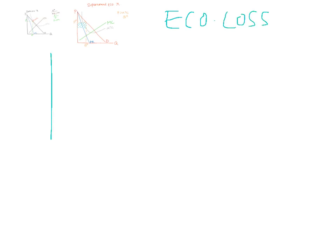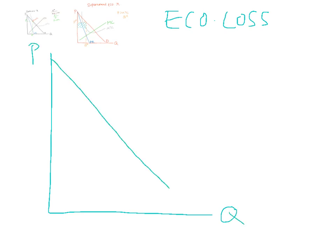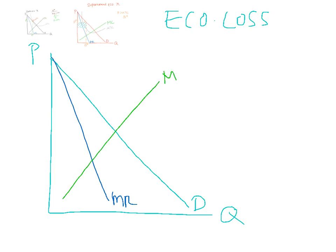And then we can look at the situation of economic loss. Draw your curve. Draw your demand curve. Draw your marginal cost curve. Set marginal cost equal to marginal revenue. Find Q star. Move up along, touch the demand curve, and you get P star.